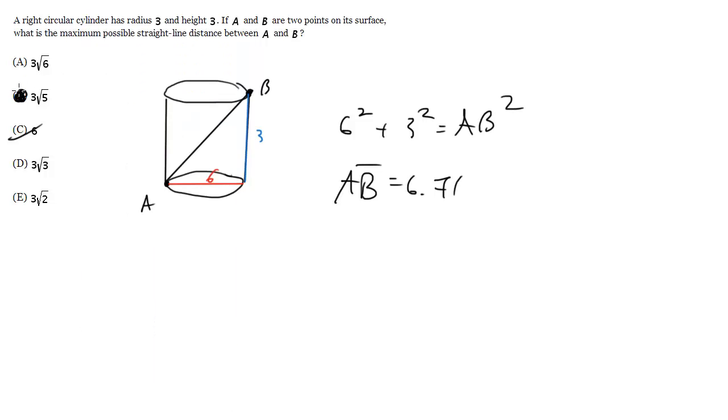So we can manage it that way, or we could have done it by hand originally. So we got AB squared equals 45, which means AB is the square root of 45.